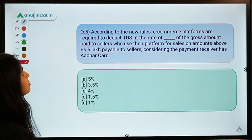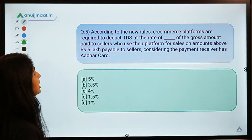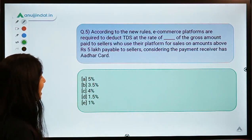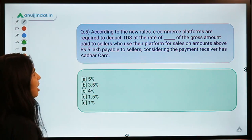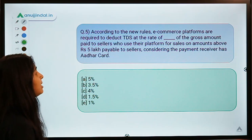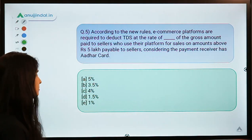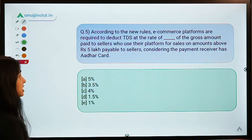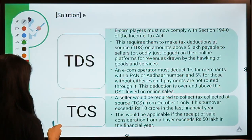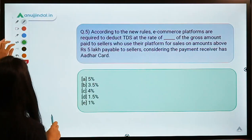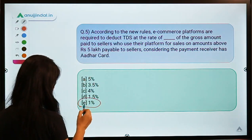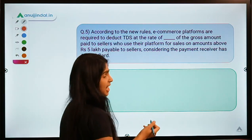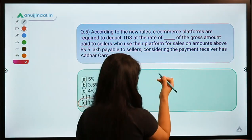Question five: according to the new rules, e-commerce platforms are required to deduct TDS at the rate of — what — of the gross amount paid to sellers who use their platform for sales, on amounts above rupees 5 lakh, considering the payment receiver has an Aadhaar card. The solution is option E: 1%.